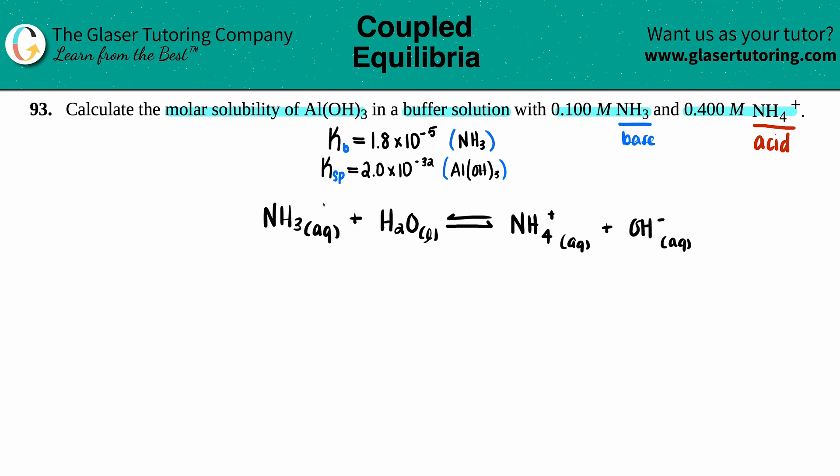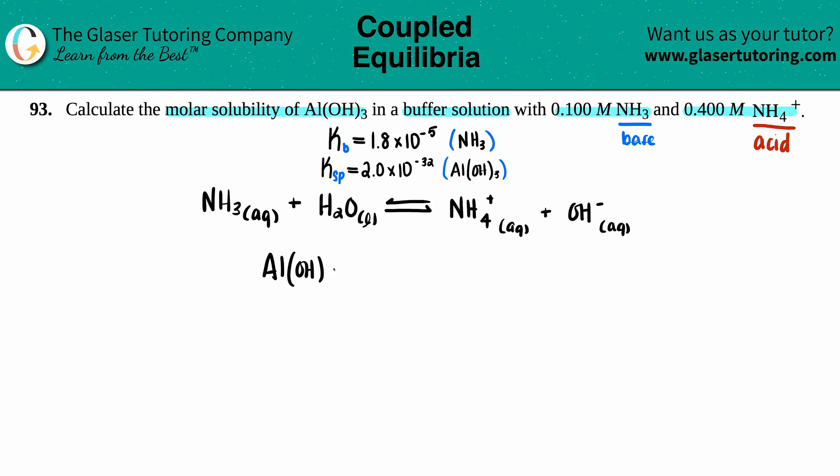Now I'm just going to write the equation for Ksp. With Ksp values, you always start with your compound and break it off into its two components. So in this case I have Al(OH)₃—this is a solid. If it's molar solubility, comes to equilibrium, dealing with K values—the two components are the aluminum and the hydroxide.